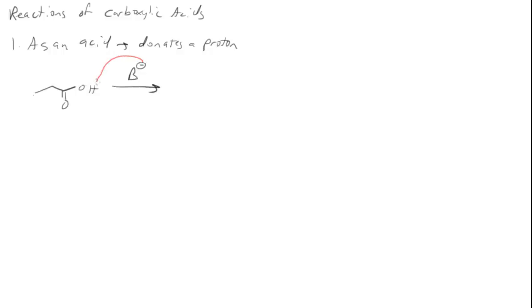And if we want to think about why this would happen, the base comes by, pulls off this proton, this lone pair then goes on to oxygen forming a carboxylate anion. Now why would that happen? It happens because this carboxylate anion is stabilized through resonance.